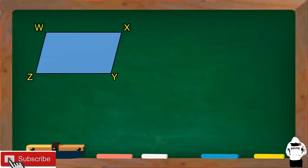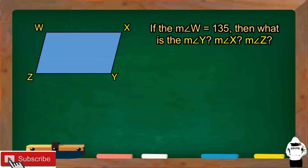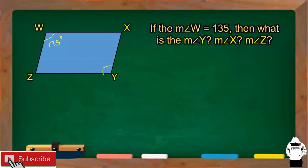Let's have another example. Parallelogram WXYZ. If the measure of angle W is 135 degrees, then what is the measure of angle Y, angle X, and angle Z? If W is 135 degrees, the opposite angle is angle Y. We apply the property wherein any two opposite angles are congruent, so angle W is congruent to angle Y. The measure of angle Y is equal to 135 degrees.